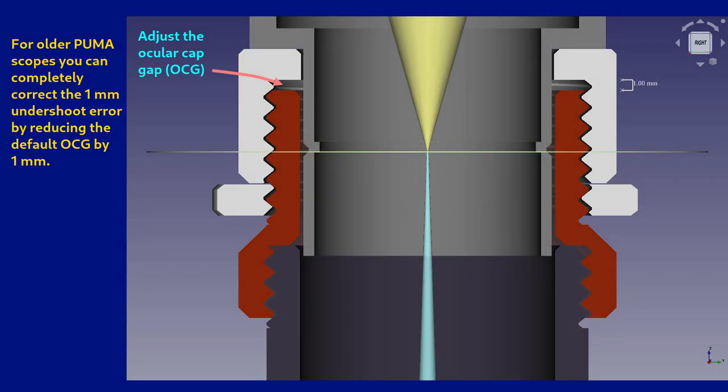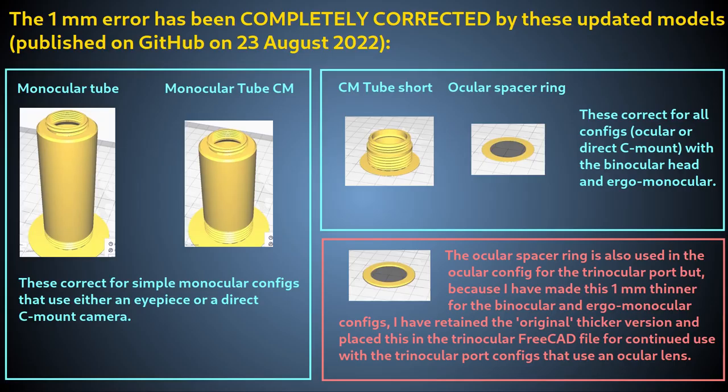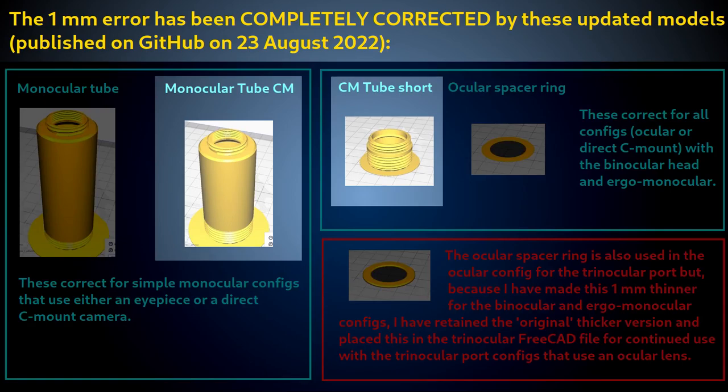For any config using a direct C mount camera, use your camera's focus adjustment to bring the chip 1mm closer to the scope. If your camera doesn't have that ability, then you will need to print the updated C mount attachment described above.